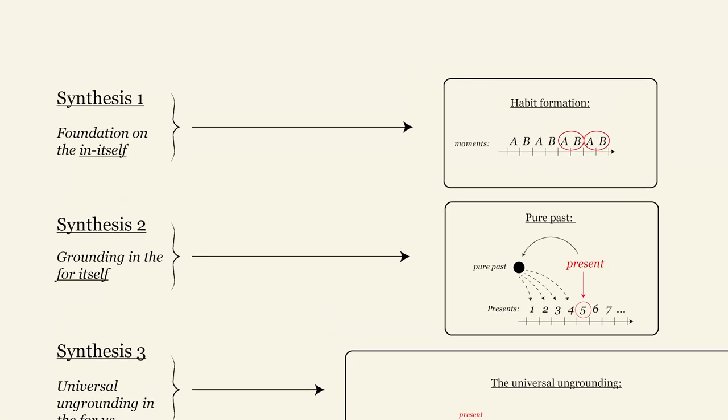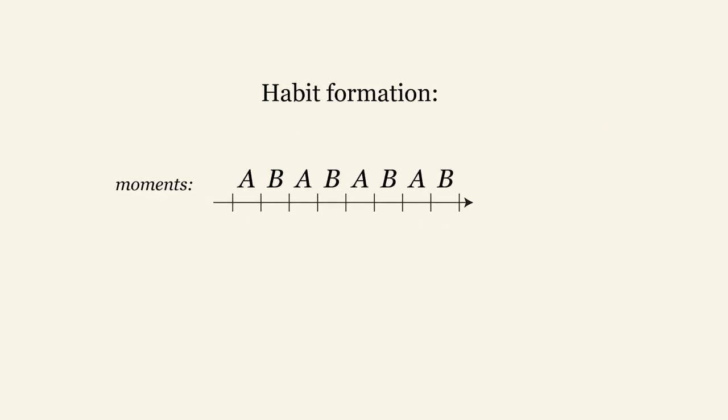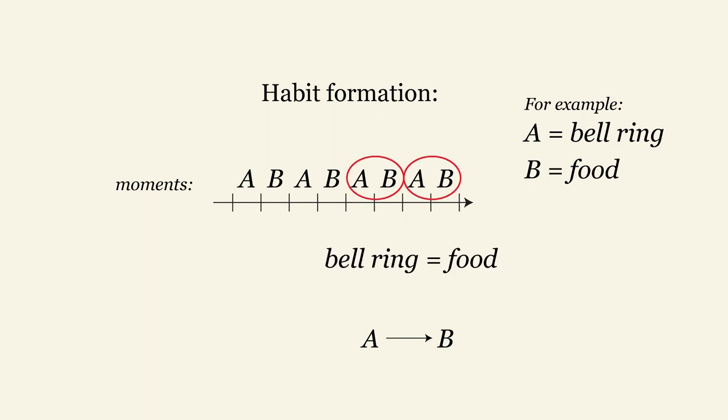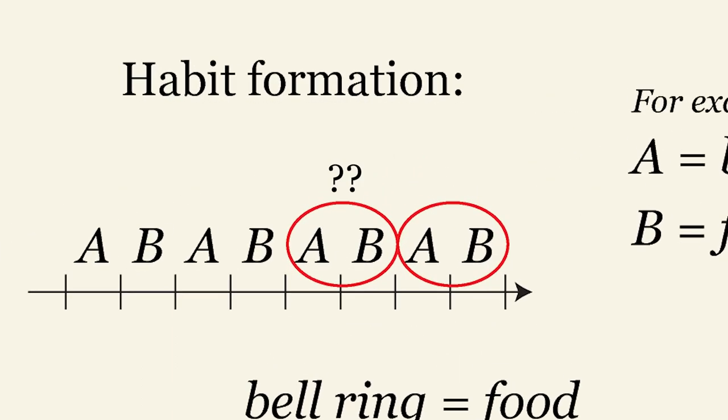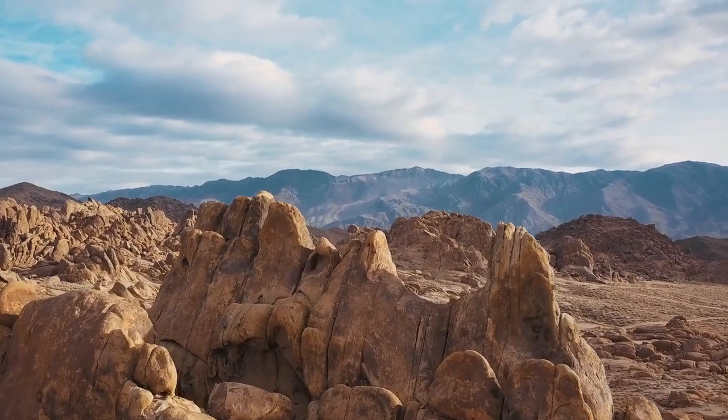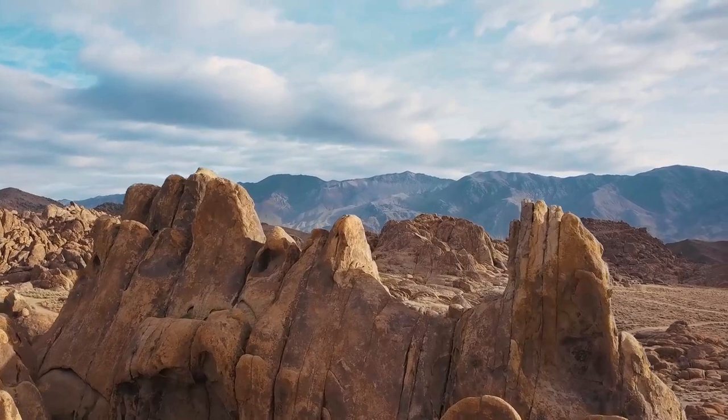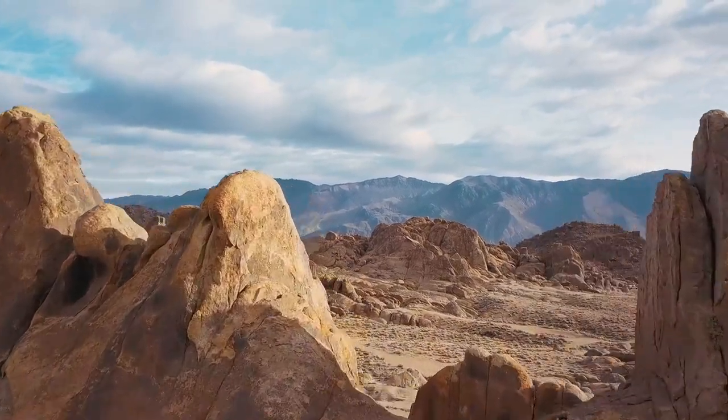So the first synthesis will accomplish a very simple task. Reacting on the first level of the in-itself, it regroups, or as Deleuze says, contracts separate moments into one. Imagine, for instance, that every time some event A occurs, event B always follows. When the bell rings, I always receive food. Very quickly, A and B will become one, and the ring of the bell will mean food. But how does this contraction happen? It's important to not presuppose anything like mind or subjectivity, or even intelligence, to explain it.